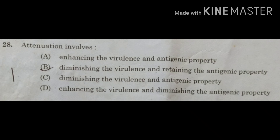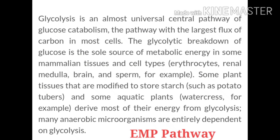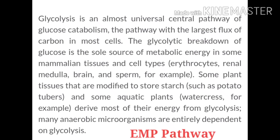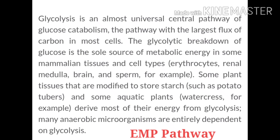The next question is: for renal medulla, brain, etc., the sole source of metabolic energy is — option A: Krebs cycle; option B: ornithine cycle; option C: EMP pathway; option D: electron transport series. The breakdown of a six-carbon molecule glucose into two molecules of three-carbon pyruvic acid is known as glycolysis or glycolytic breakdown. This is also known as the EMP pathway, because steps in this pathway were discovered by three scientists: Embden, Meyerhof, and Parnas.